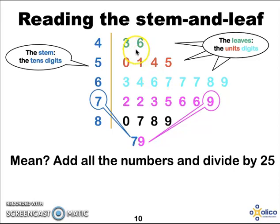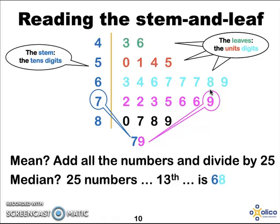You can work out, because you've ordered these numbers, you can work out your median. Remember we said that there were 25 numbers. So you can go and find the 13th number and you can say that the median is 68.